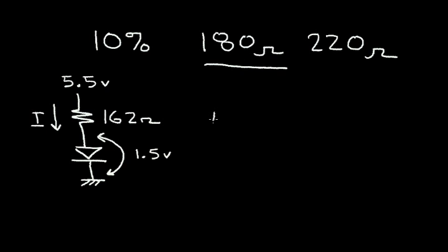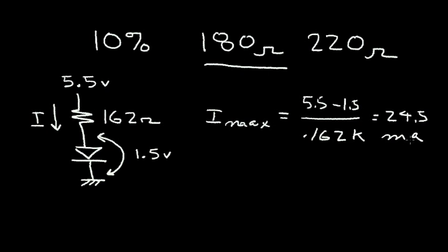So let's see what the maximum current could be. So I maximum is equal to the voltage across the resistor, 5.5 minus 1.5 divided by 0.162 k ohms. And that is equal to 24.5 milliamps. So I am under the maximum current, but I'm a little close. And so this makes me a little nervous. I'm very close to that 25 milliamps. But maybe the 220 ohm would be a better choice.